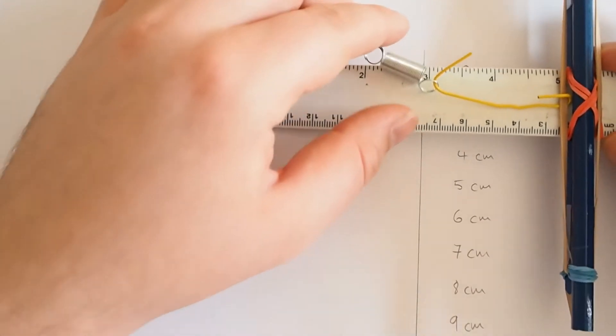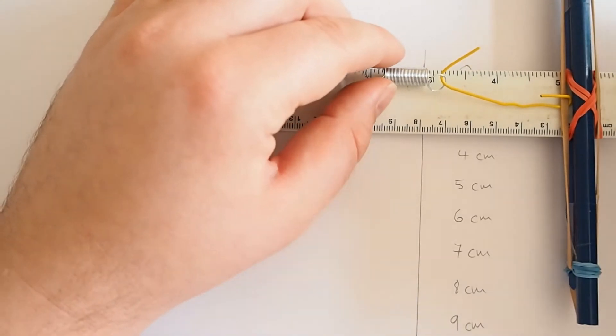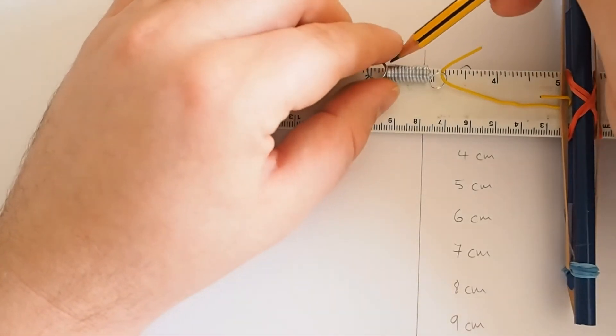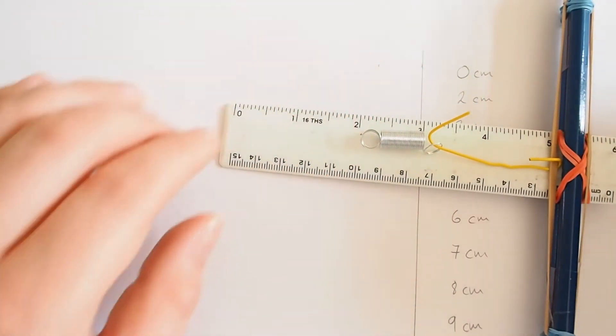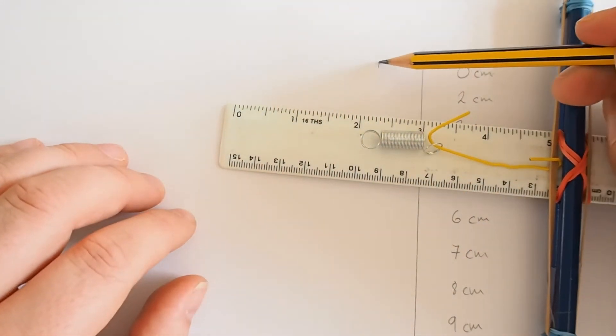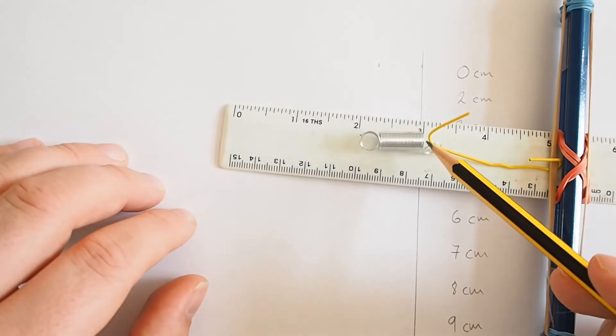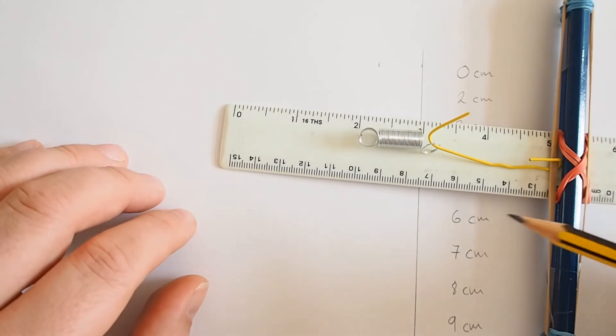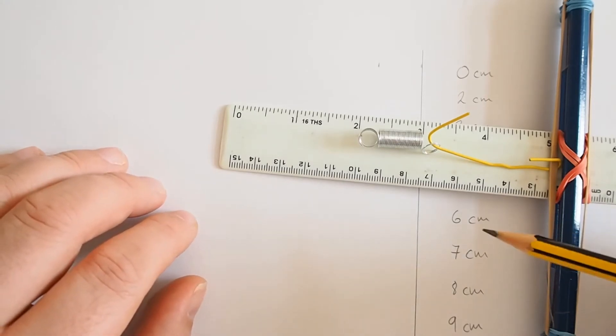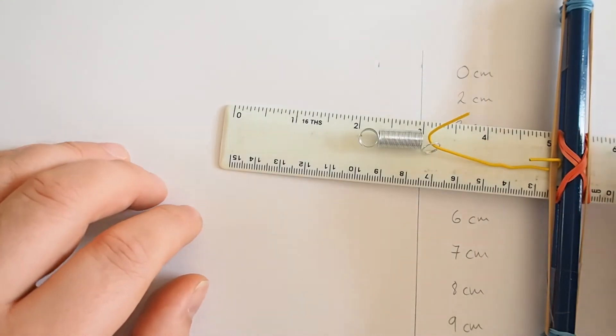So, if I start at zero, and I line that up, then with no extension, that's how long the spring is. And I'm just measuring one end of the spring to the other end of the spring. I'm not measuring from the loop to the loop. It doesn't matter where you measure from, as long as you keep it the same each time you try.